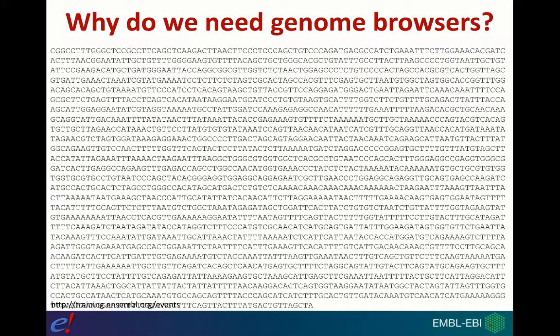When we get the genomes, Ensembl as a genome browser takes the sequence data and annotates it with genes, variation data, and comparative analyses comparing gene and genome sequences across species. We also annotate features that regulate gene expression such as promoters and enhancers. We then make everything available through our genome browser, APIs, and FTP site to scientists around the world.